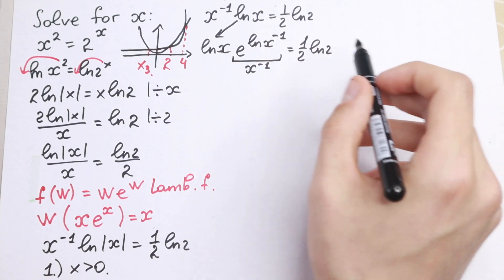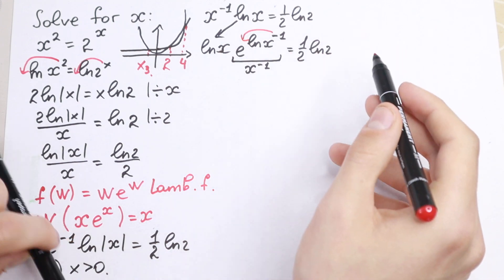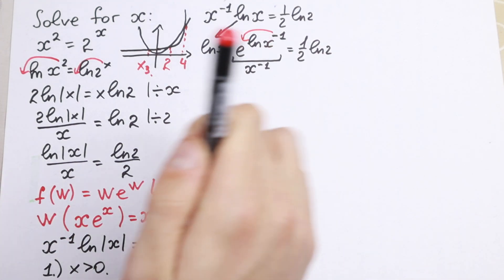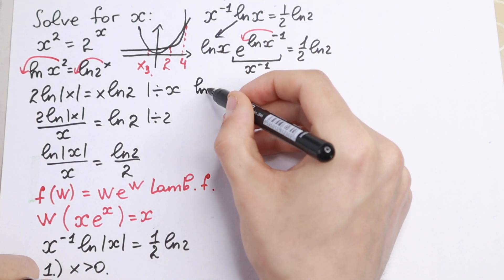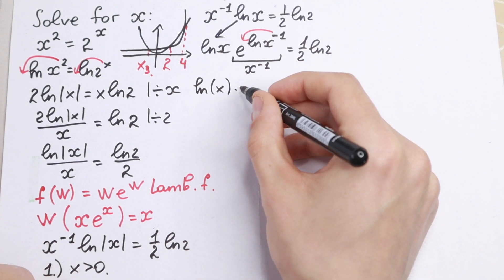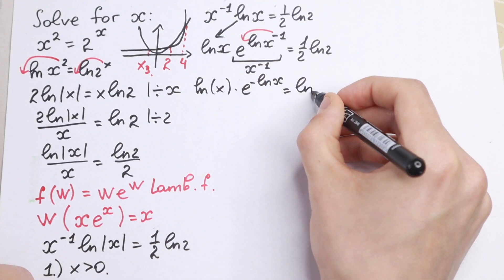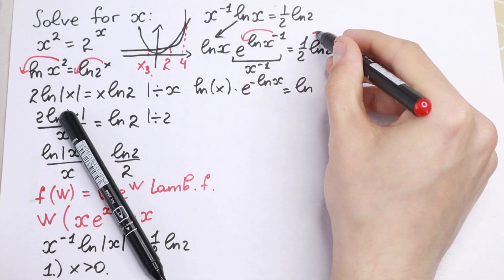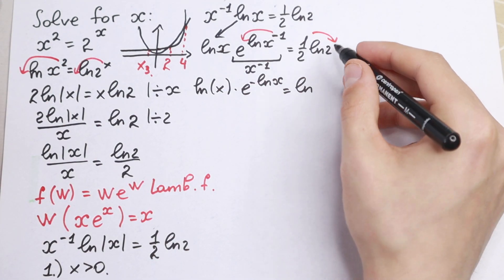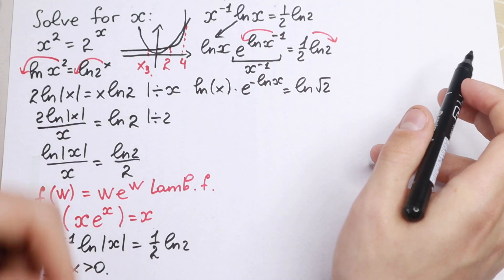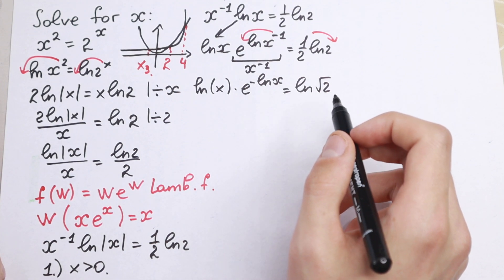So what we're going to do next? The minus goes to the front using the log property, giving us ln(x) · e^(−ln x) = ln(√2). To apply Lambert W, we need the variable and the exponent of e to match. So if we multiply both sides by minus 1, we get: −ln(x) · e^(−ln x) = −ln(√2).